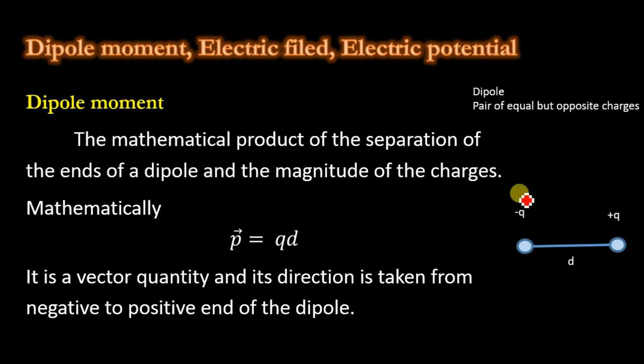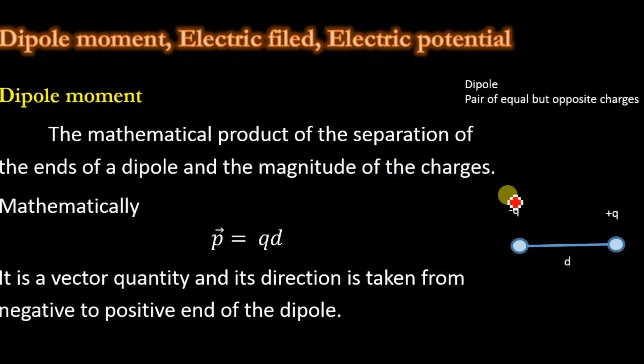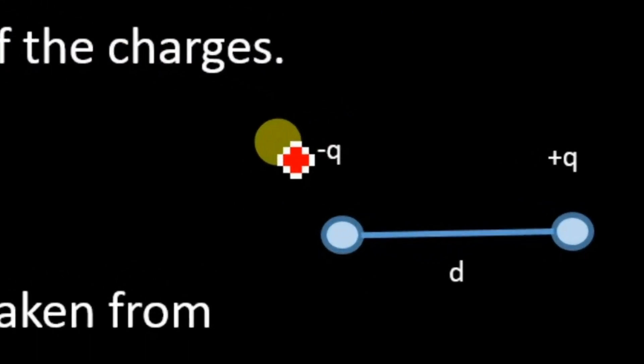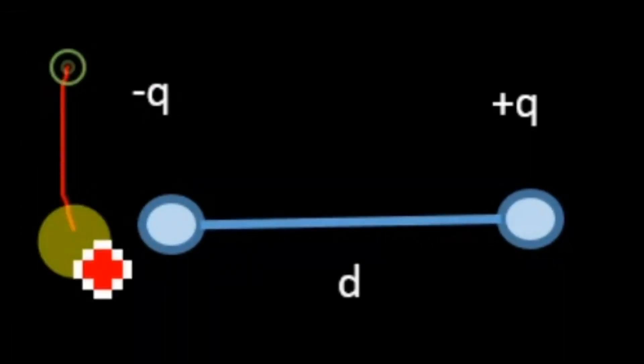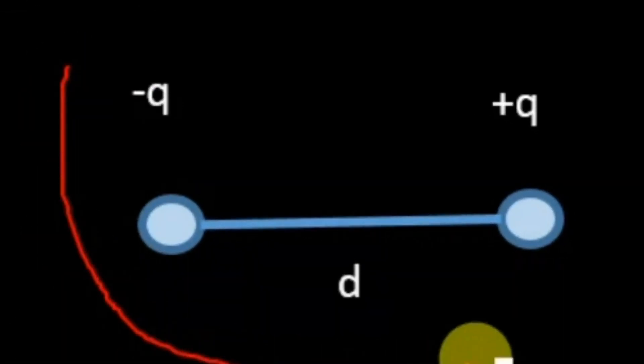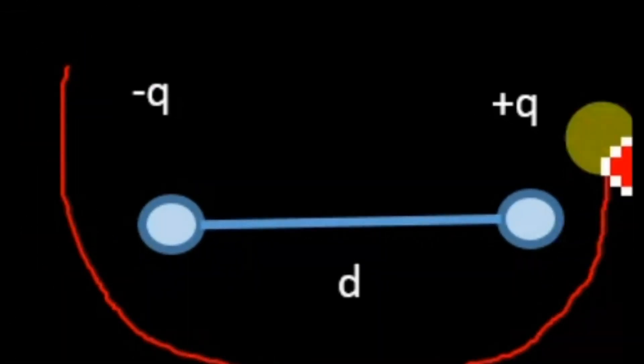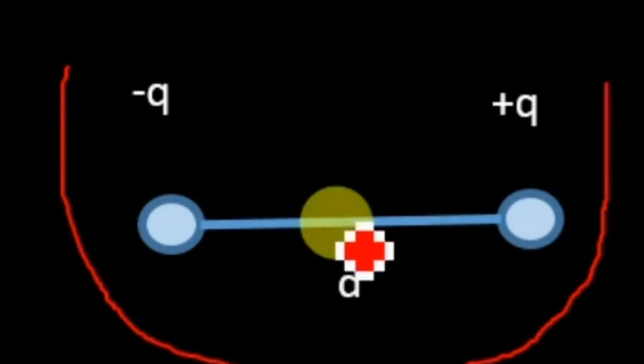What is a dipole? A dipole is a pair of equal but opposite charges separated by distance d.